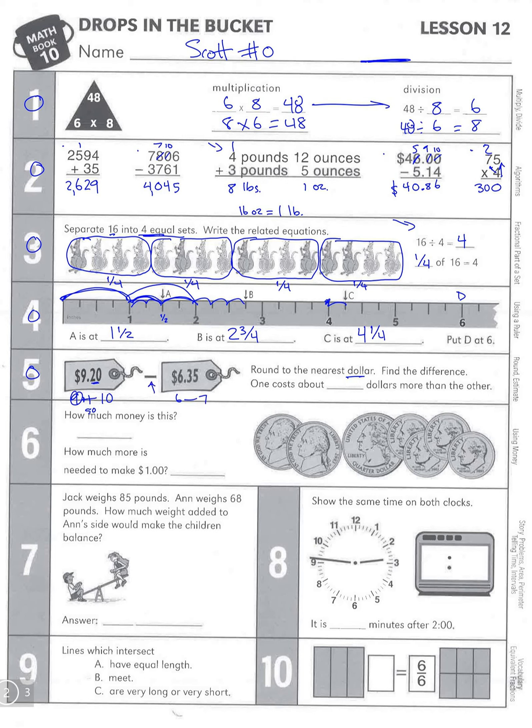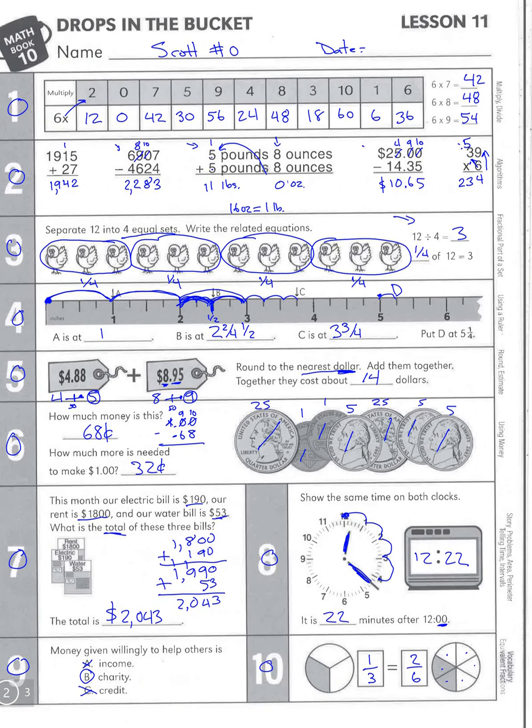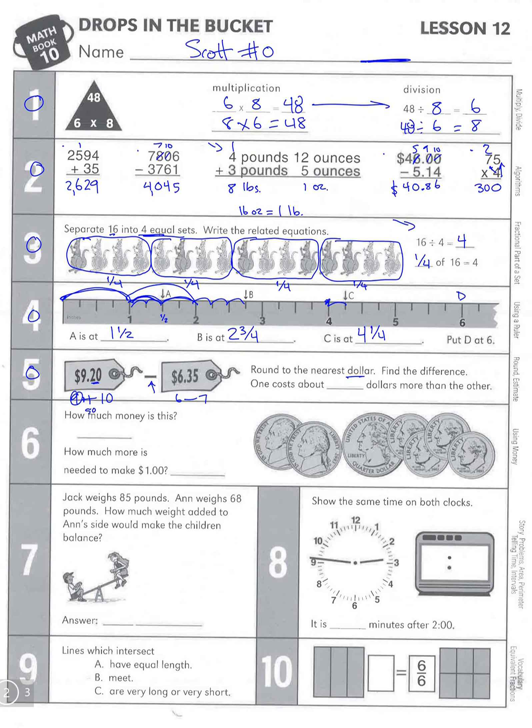Six dollars and 35 cents is between six and seven. 35 cents—if this is our 50, 35 would be over here somewhere, so six. So our equation is nine, we have nine take away six, so the difference is three. It's about three dollars.